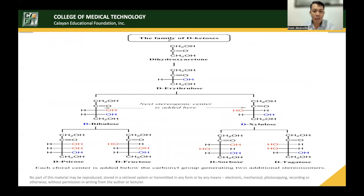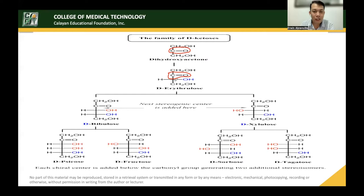For the ketose family, the parent structure is dihydroxyacetone — a 3-carbon ketose where the carbonyl group is always located at the center, the second carbon. When you add a chiral center, each addition generates two stereoisomers. Adding to dihydroxyacetone gives D-ribulose, and further additions give D-xylulose and D-fructose — all with 5 carbons — as the OH group on the bottom carbon remains on the right side, maintaining the D designation.